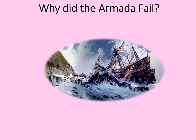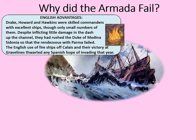Let's consider the main reasons why the Armada failed. Firstly, the English had several advantages. Drake, Howard, and Hawkins were skilled commanders with excellent ships, though in truth they only had small numbers of the most modern race-built galleons. Despite inflicting little damage during the dash up the Channel, they had rushed the Duke of Medina Sidonia so that the rendezvous with Parma failed. The English use of fireships off Calais and their victory at Gravelines thwarted any Spanish hopes of invading that year.